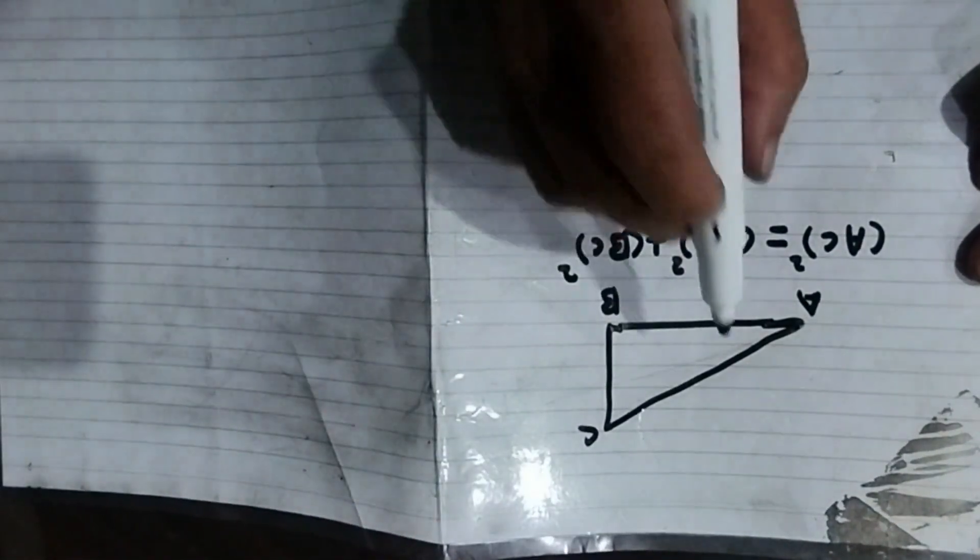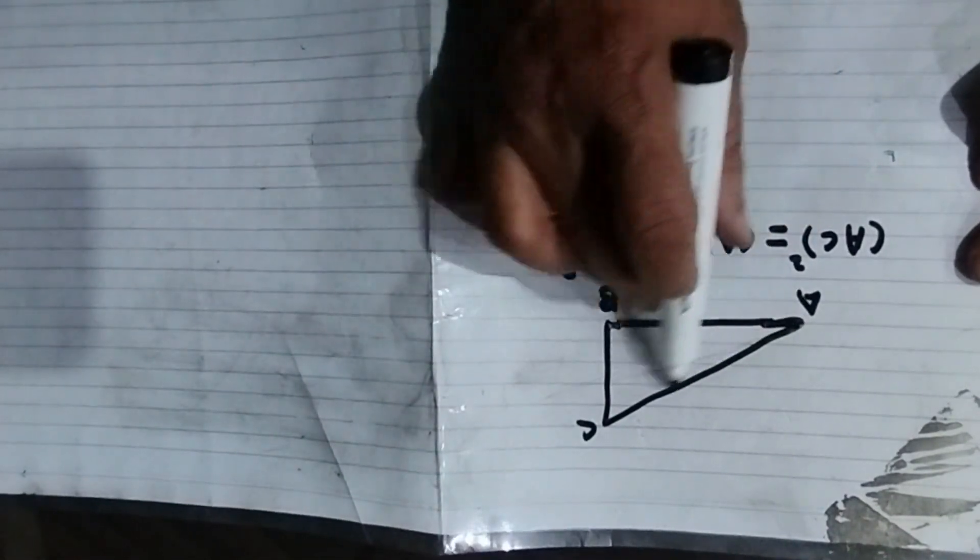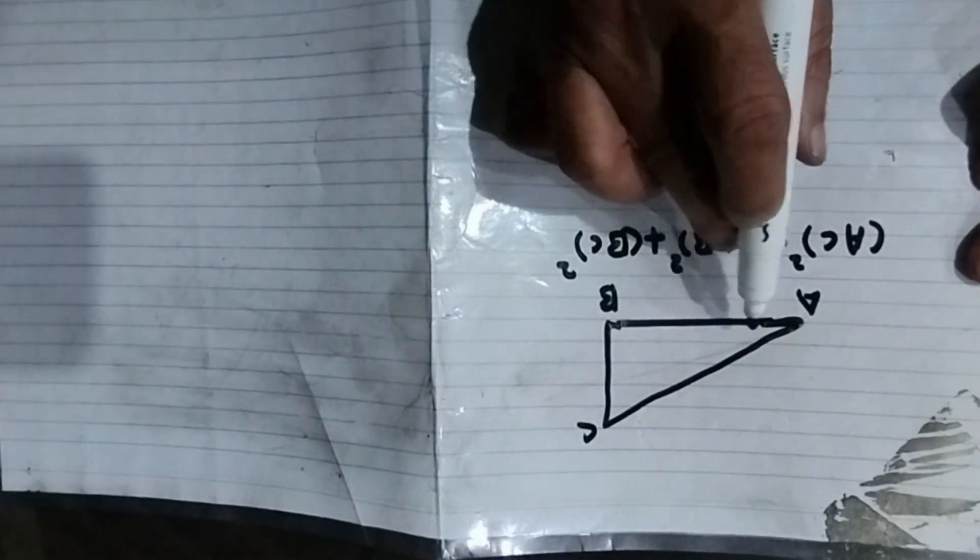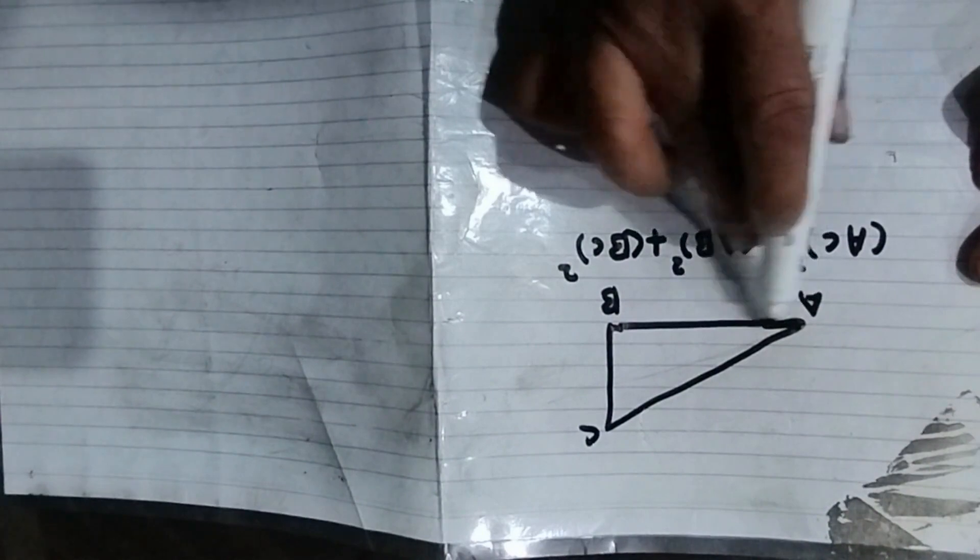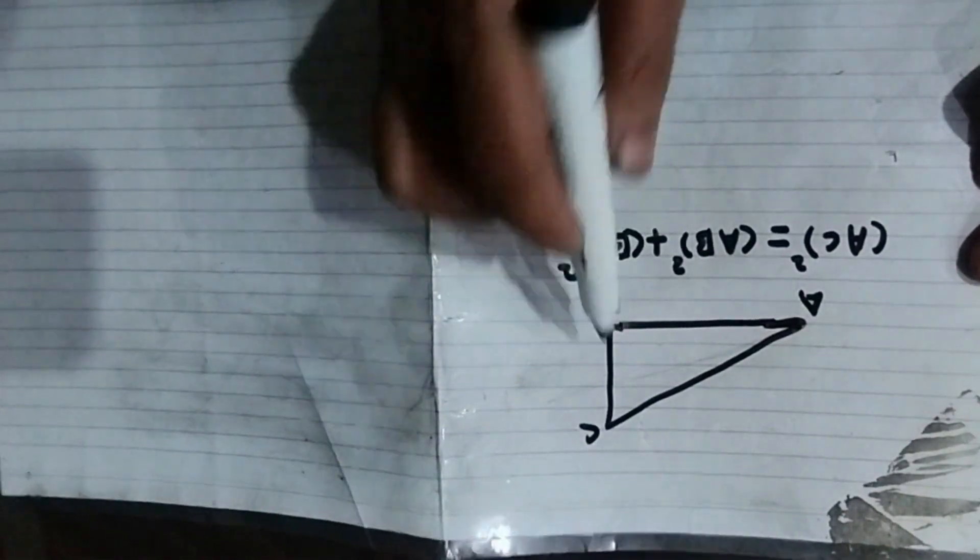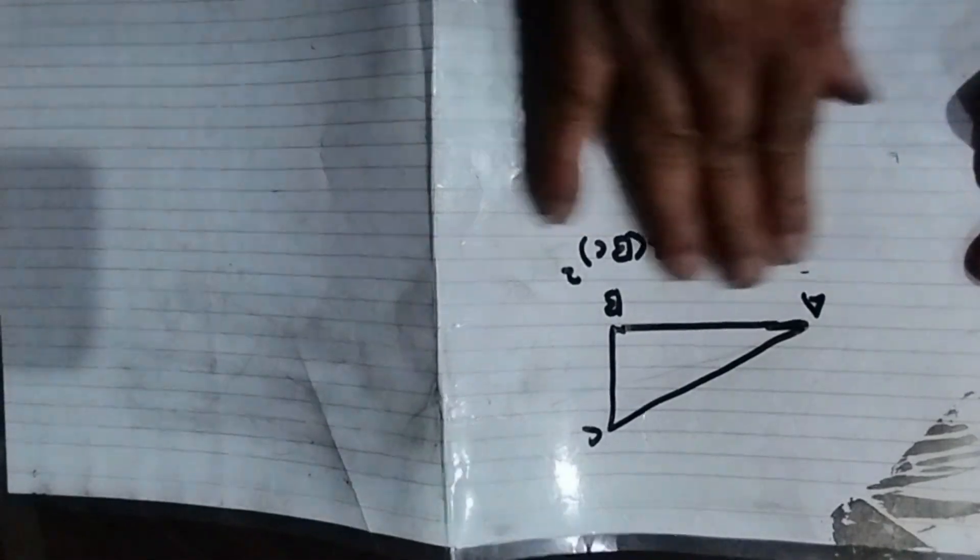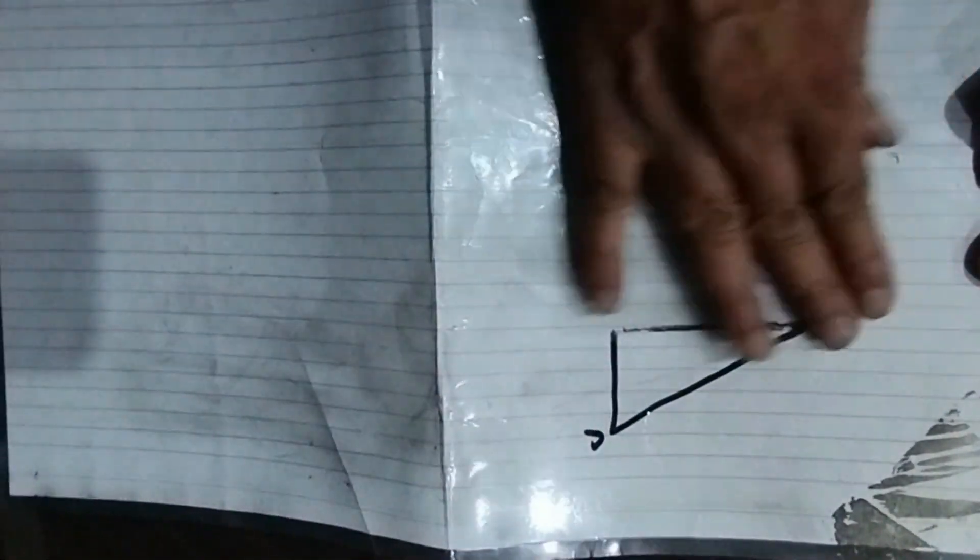It means the square of the length of the hypotenuse is equal to square of the base length plus square of the perpendicular length. This is the Pythagoras theorem. So now I will remove it and we will proceed to the problem.